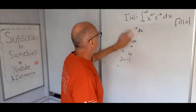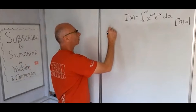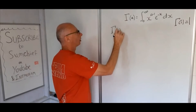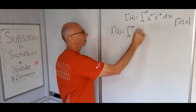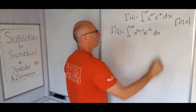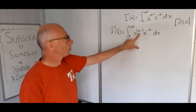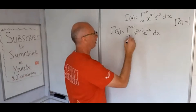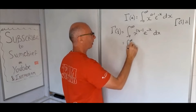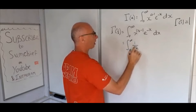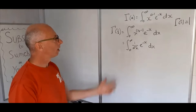Now let's try gamma of one half. Substituting a equals one half, we get the integral from 0 to infinity of x to the half minus 1 times e to the minus x dx. Since half minus 1 is minus one half, this becomes the integral of 1 over square root of x times e to the minus x dx. We need to figure out how to integrate this — one approach is a u-substitution.